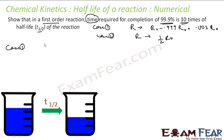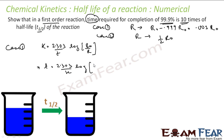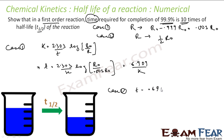Case 1: T₁ = (2.303 / K) × log(R₀ / 0.001R₀) = (2.303 / K) × log(1000) = 6.909 / K. Case 2: T½ = 0.693 / K (directly from the formula).